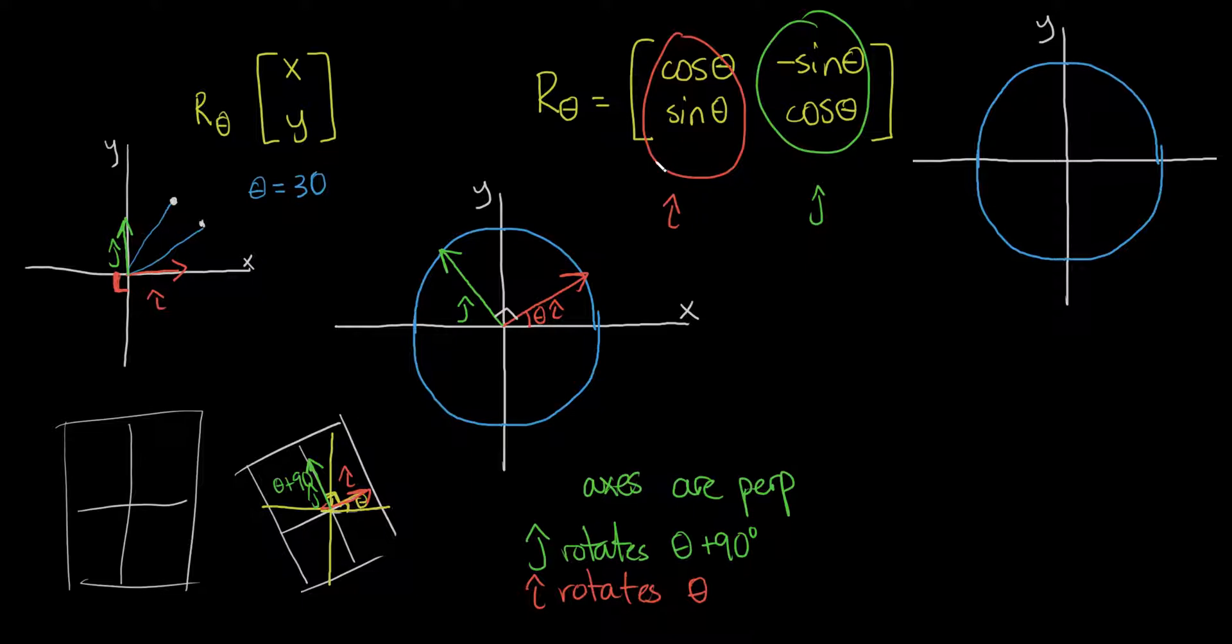Well, it's because the 90-degree rotation from cosine is negative sine. And the 90-degree rotation from sine theta is cosine theta.